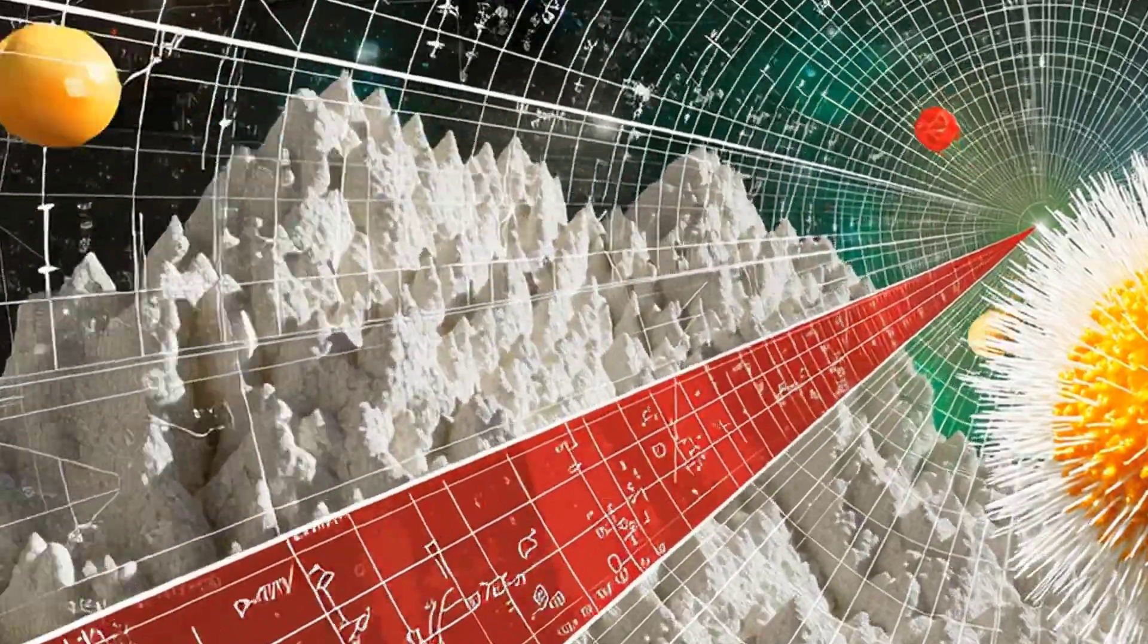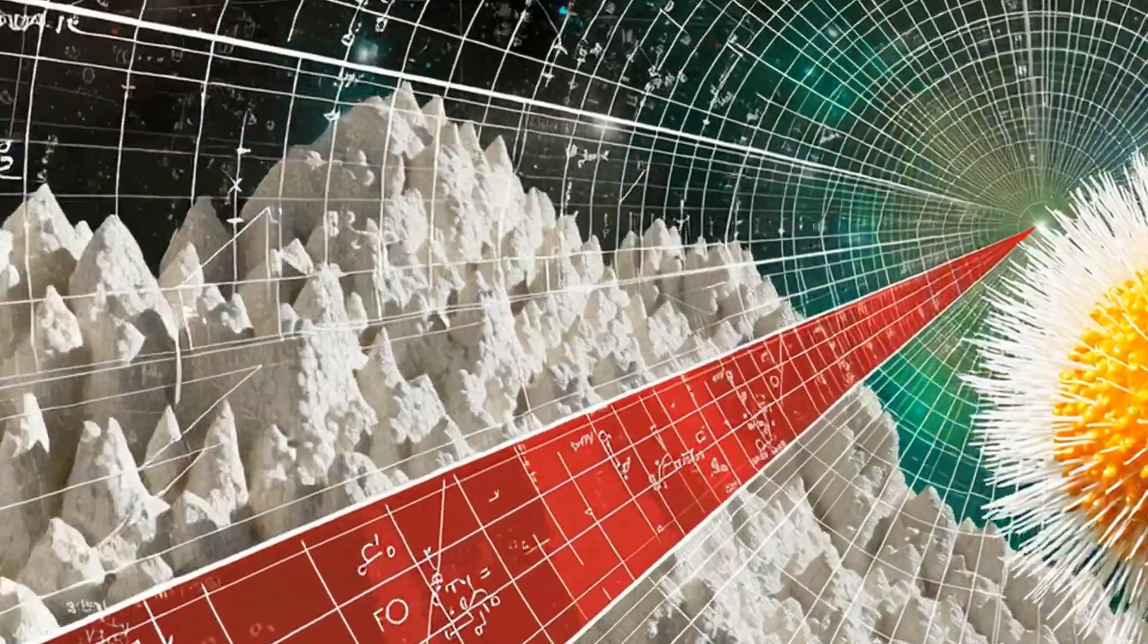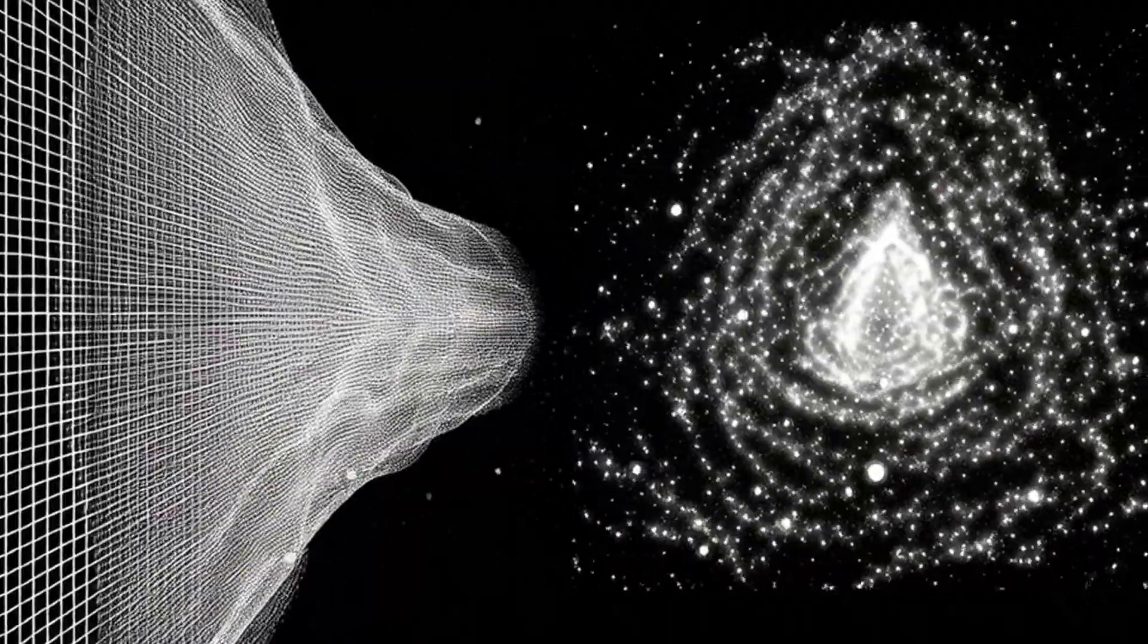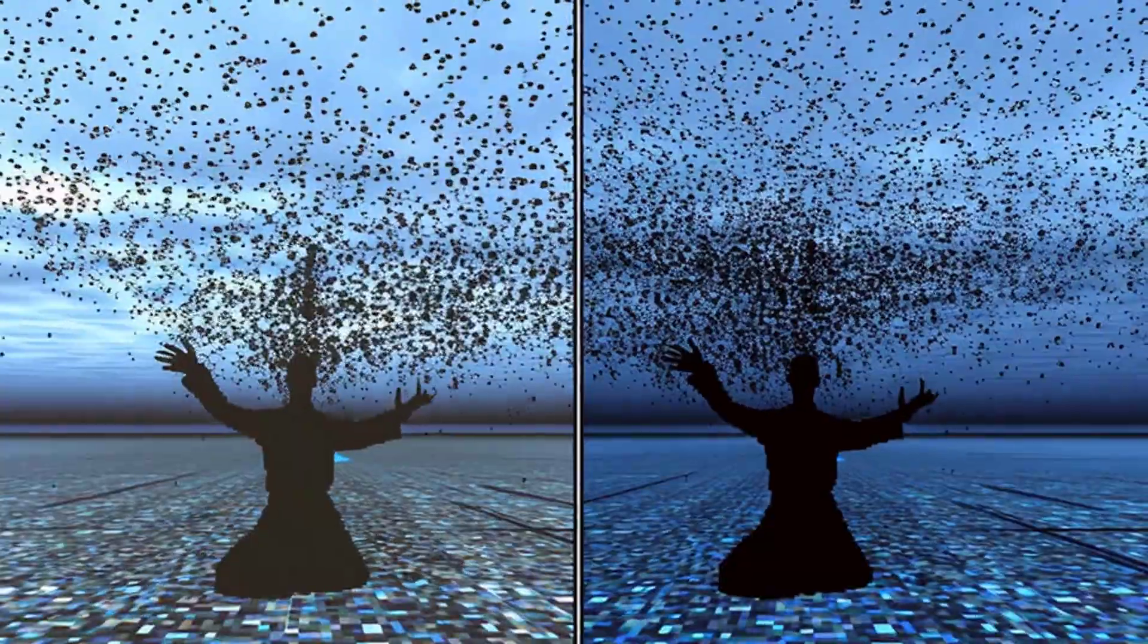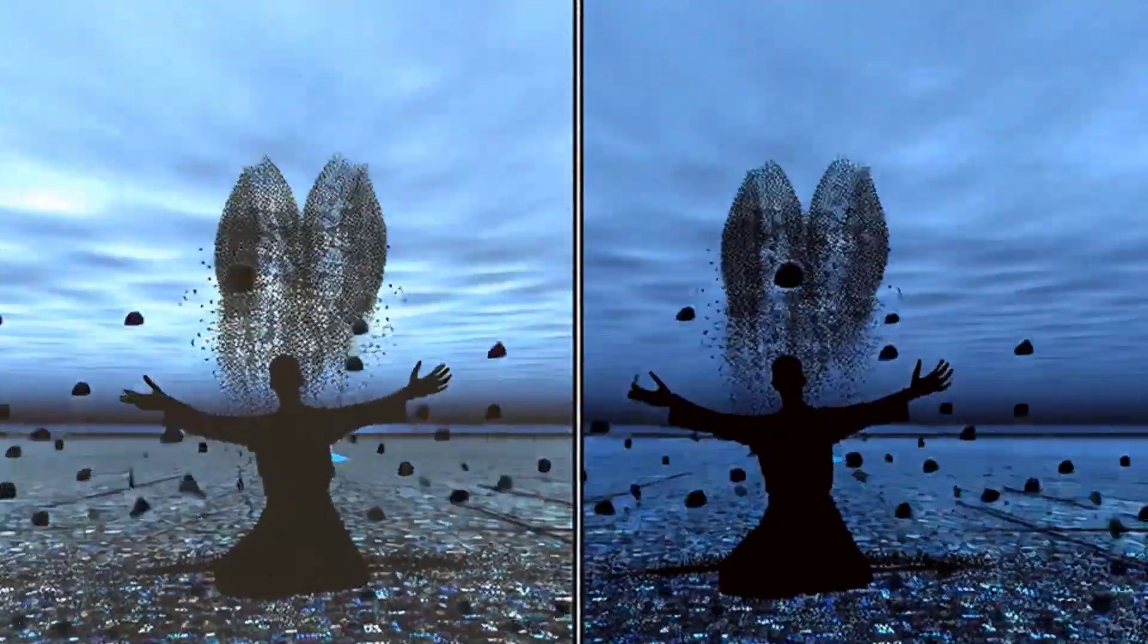Reality at this scale looks pixelated, like a digital screen that from far away appears smooth, but up close reveals individual dots. Isn't it strange that the same world feels continuous to us, but granular to its smallest parts?